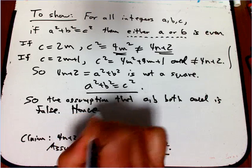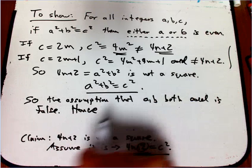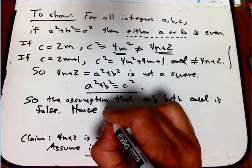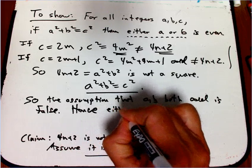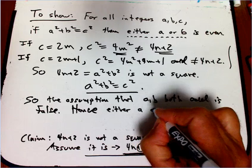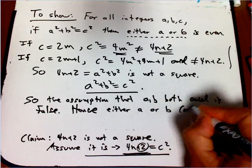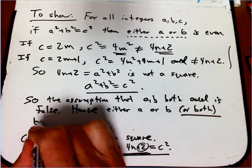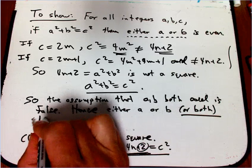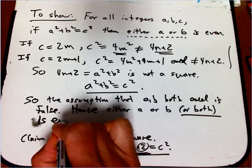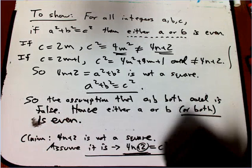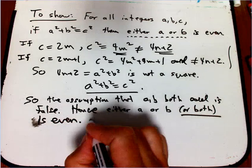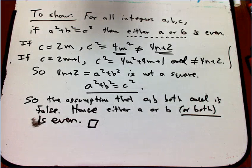So, the assumption that a and b are both odd is false. And here I'm really spelling out, because there were these two levels, I'm spelling out a little bit more than I'd absolutely have to, what the conclusion is. Hence, either a or b, and I'll put in an or both to emphasize that, but you don't have to, is even. And I'll put a little box for the end of that proof. And that's where I want to stop this one.